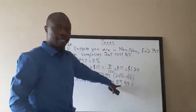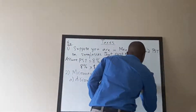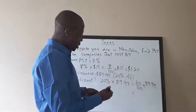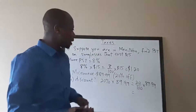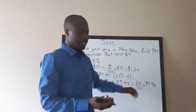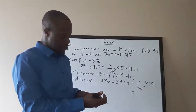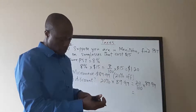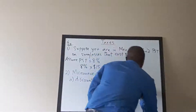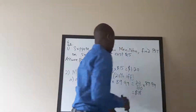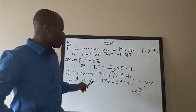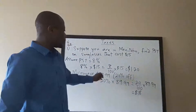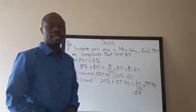That is 20 over 100 times 89.99. You can plug this into the calculator as 20 times 89.99 divided by 100. The result is roughly $18. So if you buy this microwave and it's 20% off, they're going to take $18 off the $89.99 price.